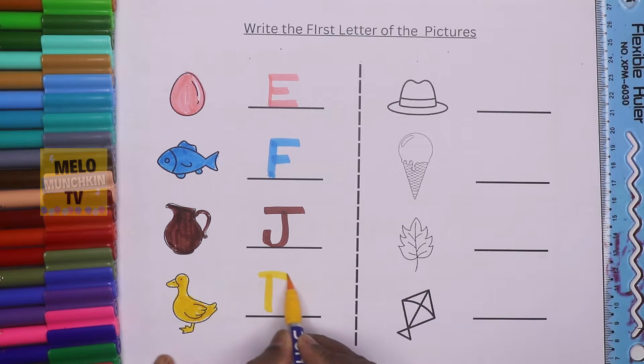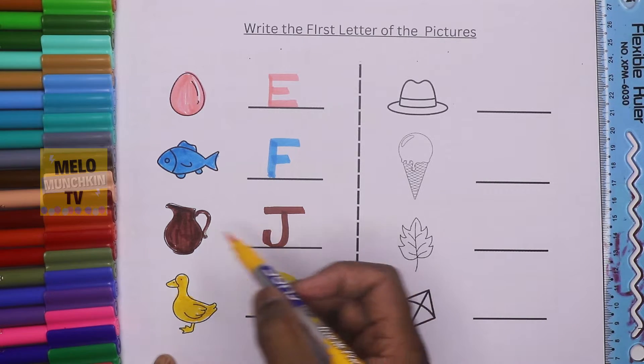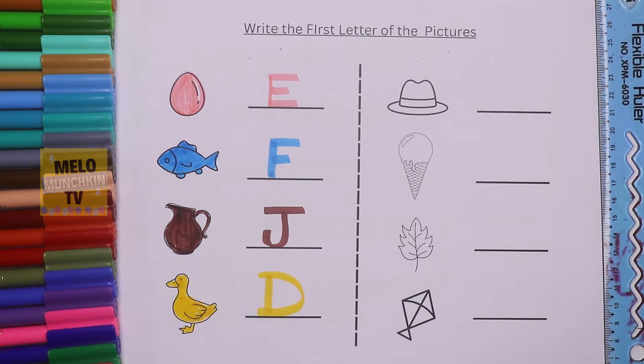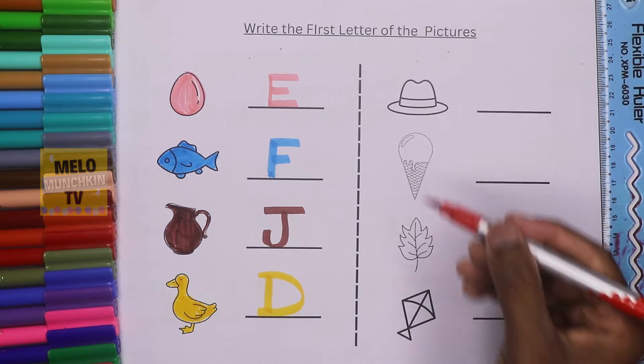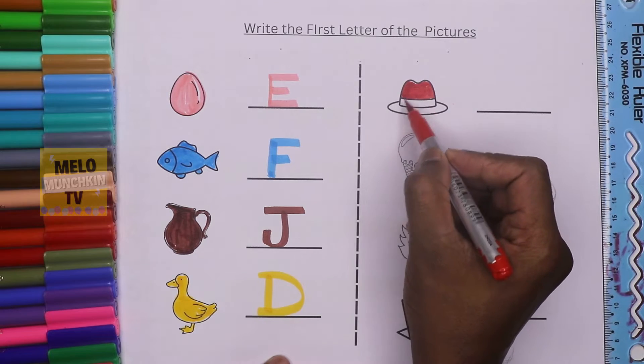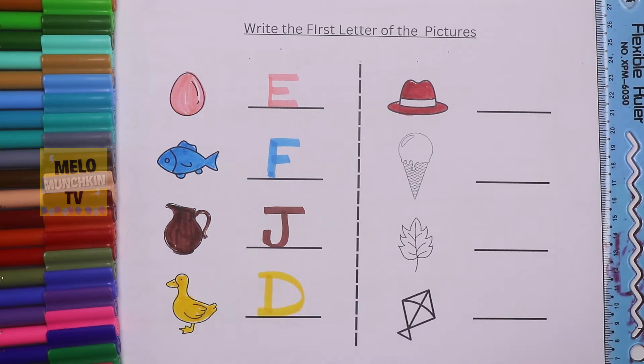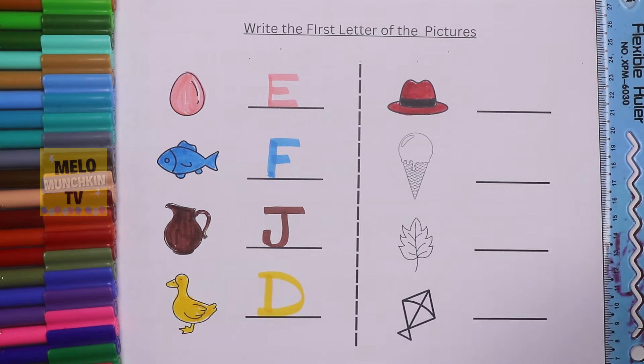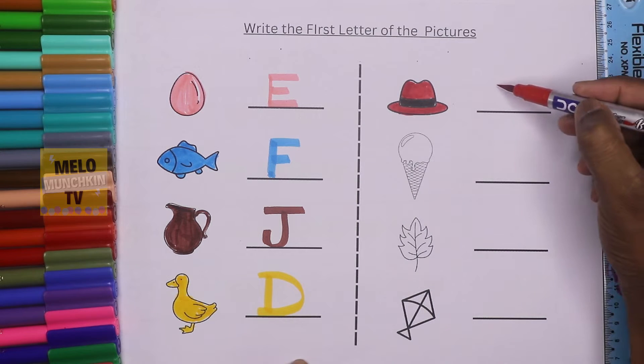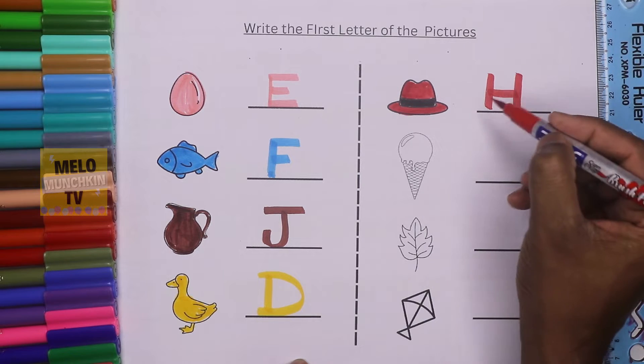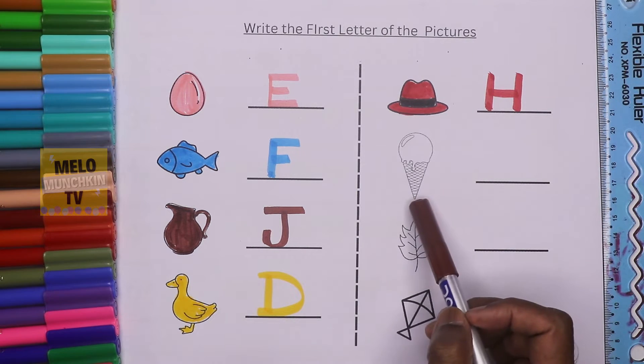color this hat. I'll use black color. This is hat, and the first letter is H. H for hat. This is ice cream